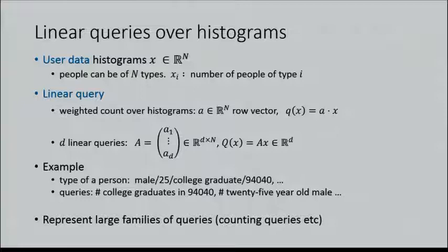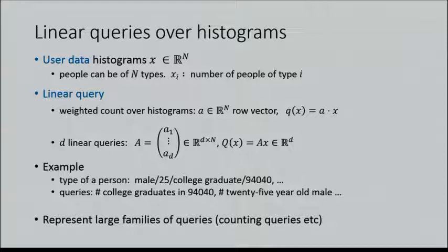As an example: suppose people are characterized by gender, age, education background, and zip code. Then queries can count things like the number of college graduates living in a certain area, or people of a certain age or gender. These queries represent a very large family, including the celebrated counting queries. We allow the matrix A to be from real-valued space, making this quite general.